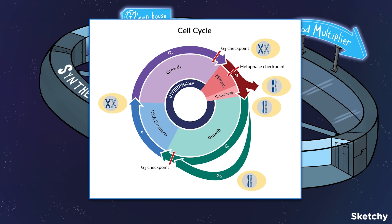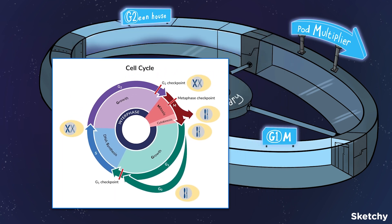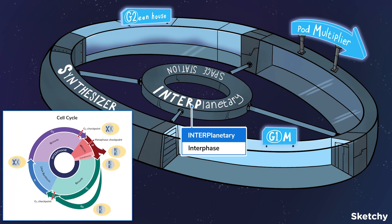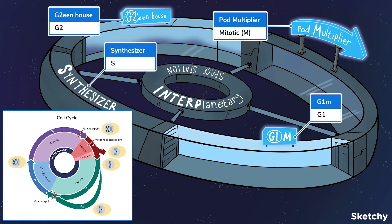A cell spends most of its life in interphase. Interphase is further divided into G1, S, and G2. This interplanetary space station is fully equipped with a brand new gym, a factory for synthesizing new information, a greenhouse, and a pod multiplier — because no space station is complete without a pod multiplier.